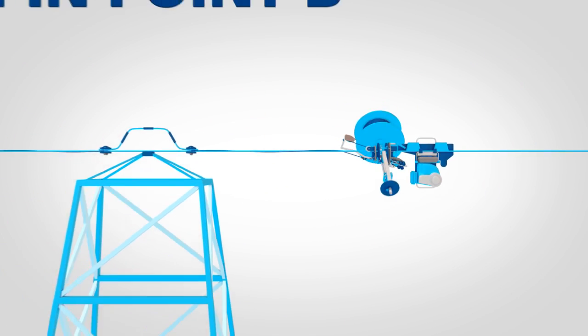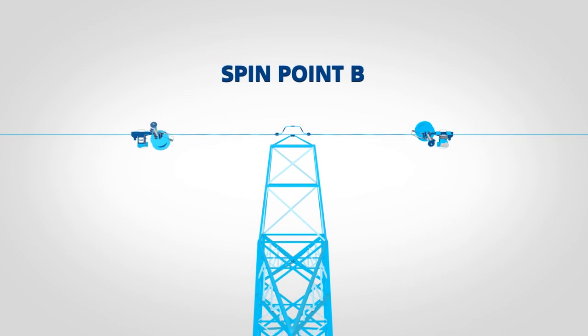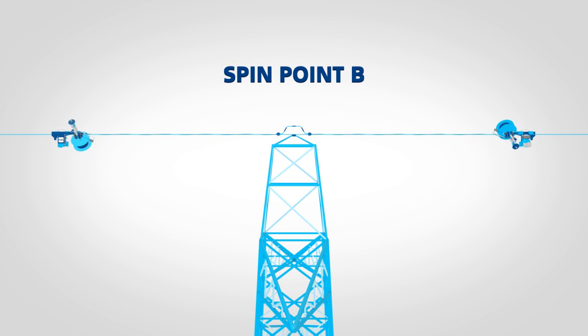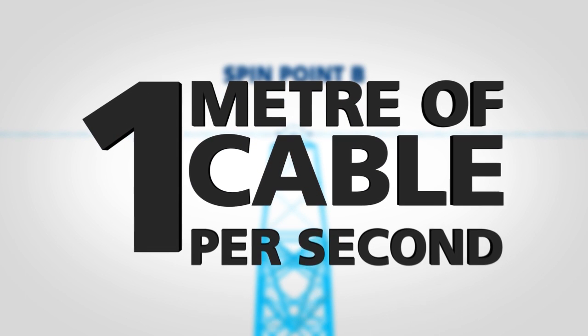Radio-controlled tugs pull the machines away from the spin point over the conductor in opposing directions. Each machine is capable of wrapping up to one meter of cable per second.